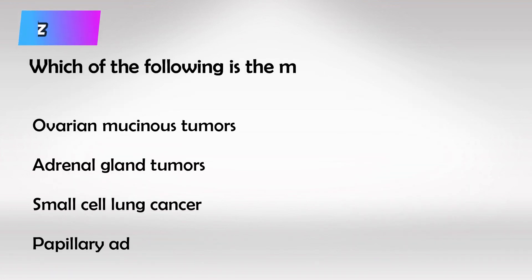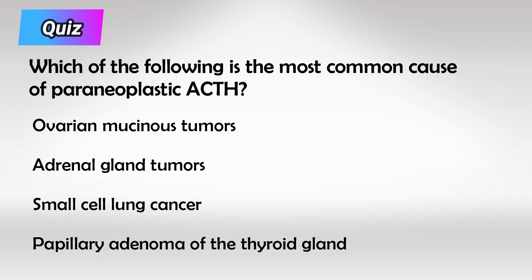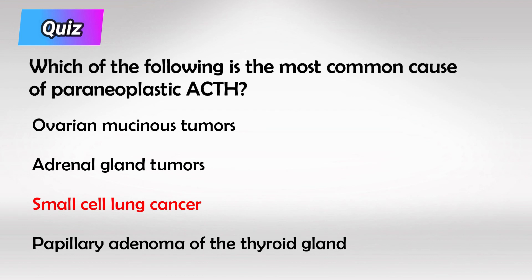Here's a small quiz: which of the following cancers is most likely to secrete ACTH as a paraneoplastic disorder? Small cell lung cancer and bronchial carcinoids are the most common causes of ACTH-secreting tumors.